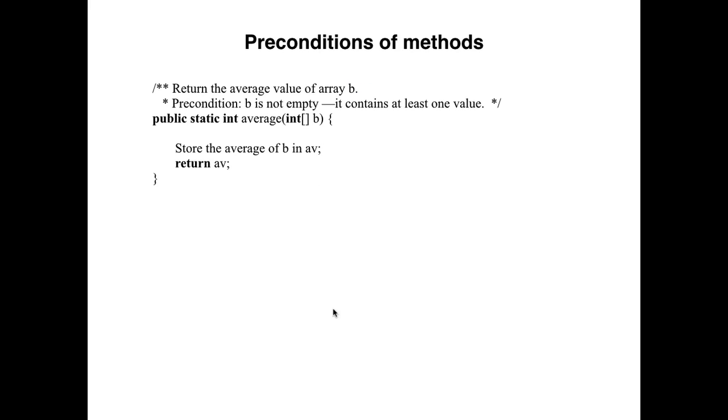In Java, we put preconditions in method specifications. For example, in this specification, array b should not contain zero values because the average of zero values is undefined. The precondition in the specification is actually the precondition in this Hoare triple. It is true when the method body starts execution.